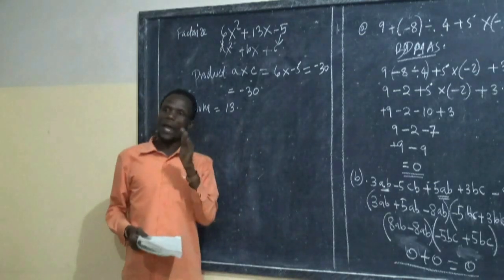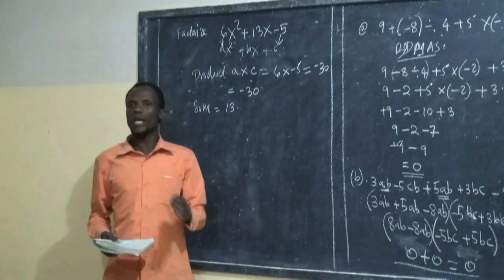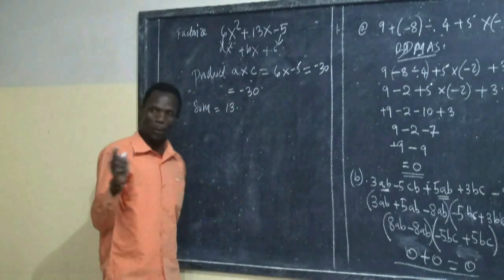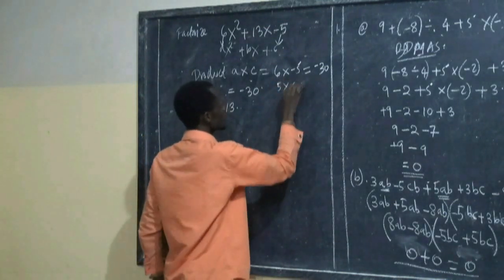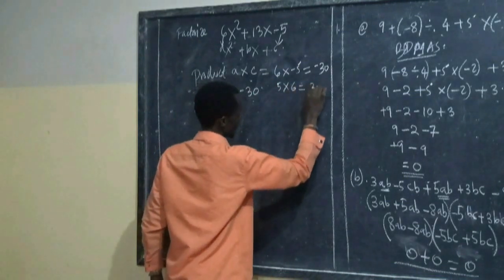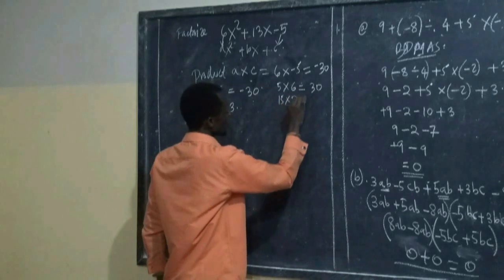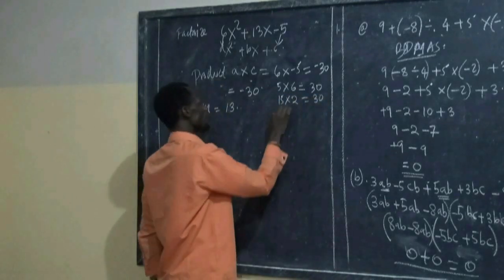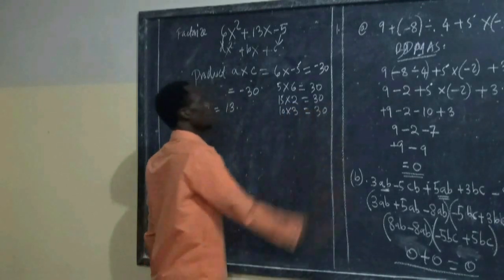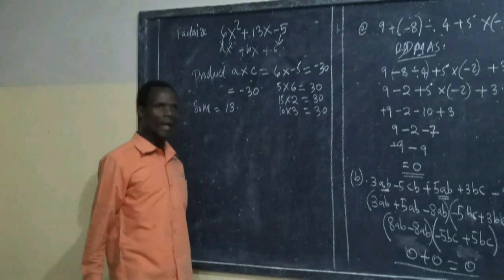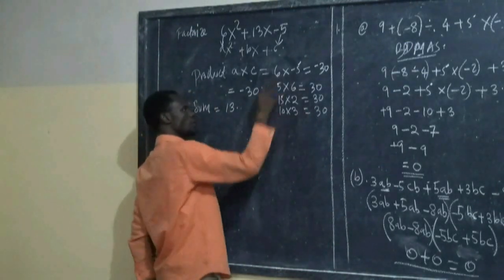Now in another way, you have to say this: which number times which number gives you 30? We have so many of them. We have 5 times 6 equals 30, we have 15 times 2 equals 30, we have 10 times 3 equals 30. We have all of those, and 30 times 1 also equals 30.